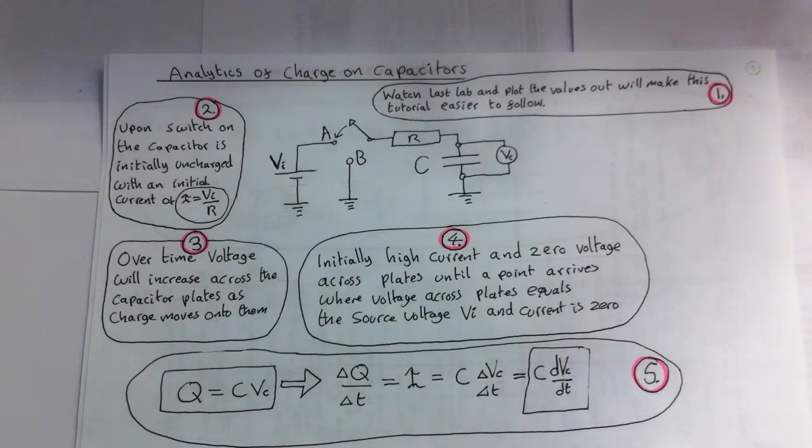What is happening is as follows. Upon switching on the cap is initially uncharged. We get an initial current of I equals VI over R. And no voltage can be measured across the cap. But over time a voltage will build up between the plates as charge is moved onto them.